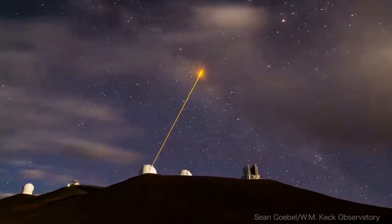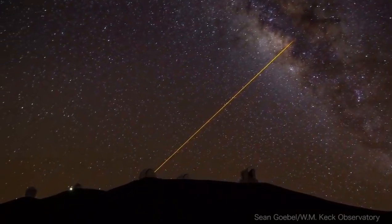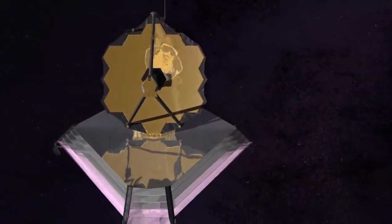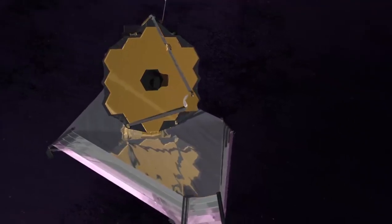Because TOI 700 is bright and nearby, the planets are good candidates for precise mass measurements by ground-based telescopes. Future missions may also tell us if the worlds have atmospheres, but scientists need to know what kinds of signals to look for.